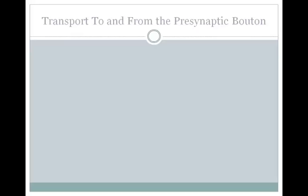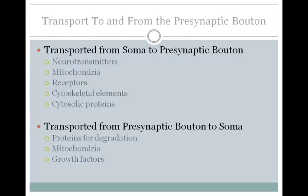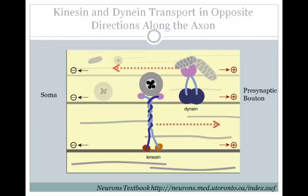Unlike the cell soma or dendrites, the axon and presynaptic bouton do not contain ribosomes, so local protein synthesis cannot occur. This means the presynaptic bouton and axon rely on transport from the soma. Many things are transported from the soma to the presynaptic bouton, including the neurotransmitters that will be released through the synaptic vesicles, mitochondria, receptors, cytoskeletal elements, as well as cytosolic proteins. This transport is a two-way street, because some things must be transported back to the soma, including proteins for degradation, mitochondria, and growth factors.